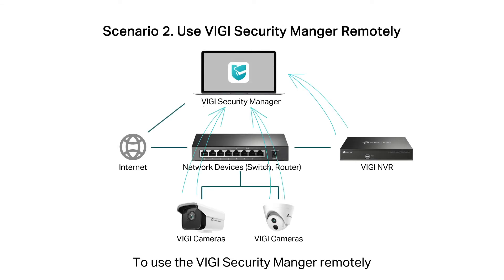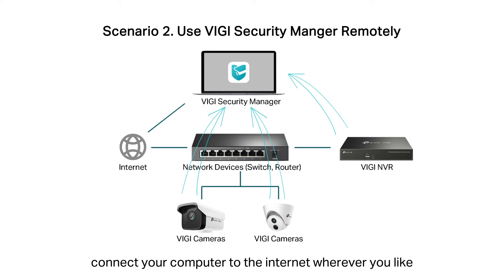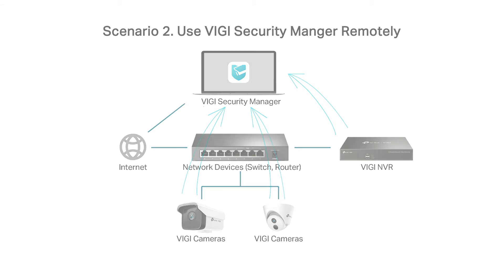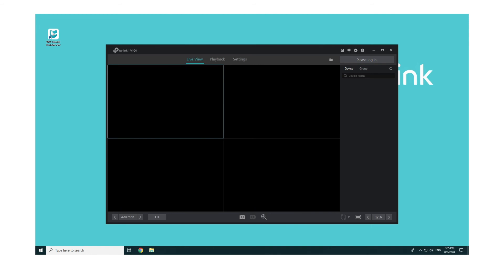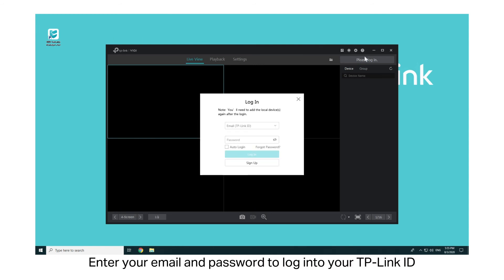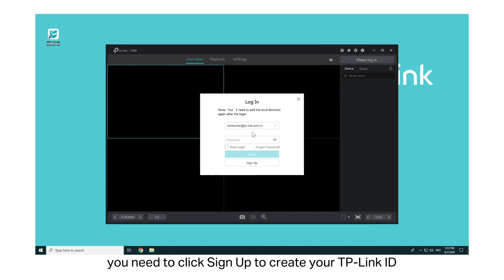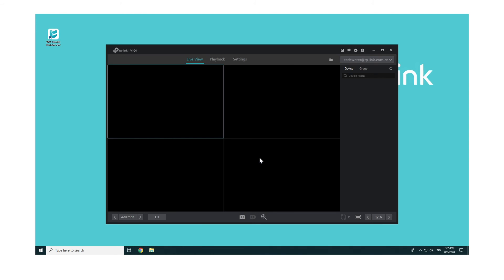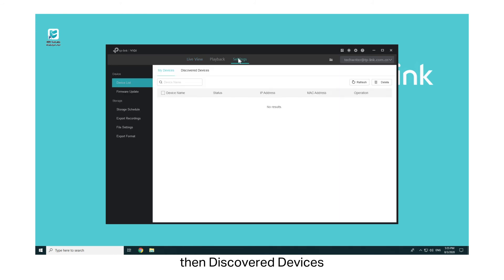Scenario 2: To use the Vigi Security Manager remotely and monitor your home or office while you're away, connect your computer to the internet wherever you like. Go to the TP-Link Download Center, then download, install, and run the Vigi Security Manager on your computer. Enter your email and password to log in to the TP-Link ID. If you don't have a TP-Link ID, click Sign Up to create one. Then enter a description of your TP-Link ID, or simply click Skip. Go to Settings, then Discover Devices.